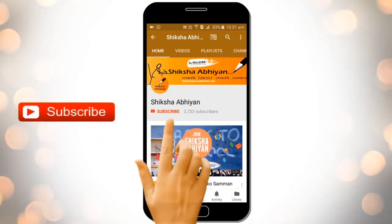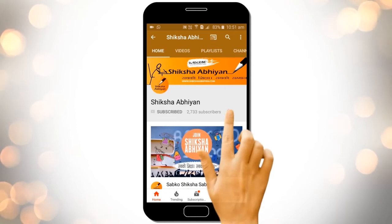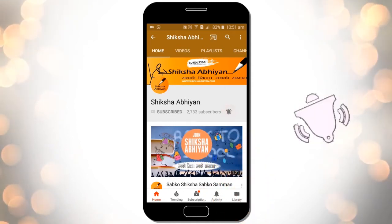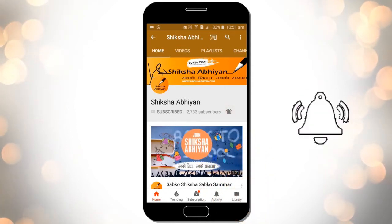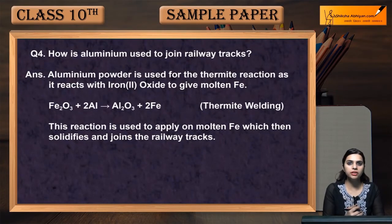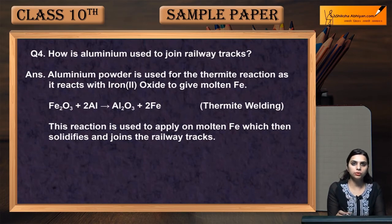Subscribe to our channel by clicking the subscribe button, click the bell button, and enjoy the latest uploads from our channel. Hello students, our next question is question number four: how is aluminium used to join railway tracks?